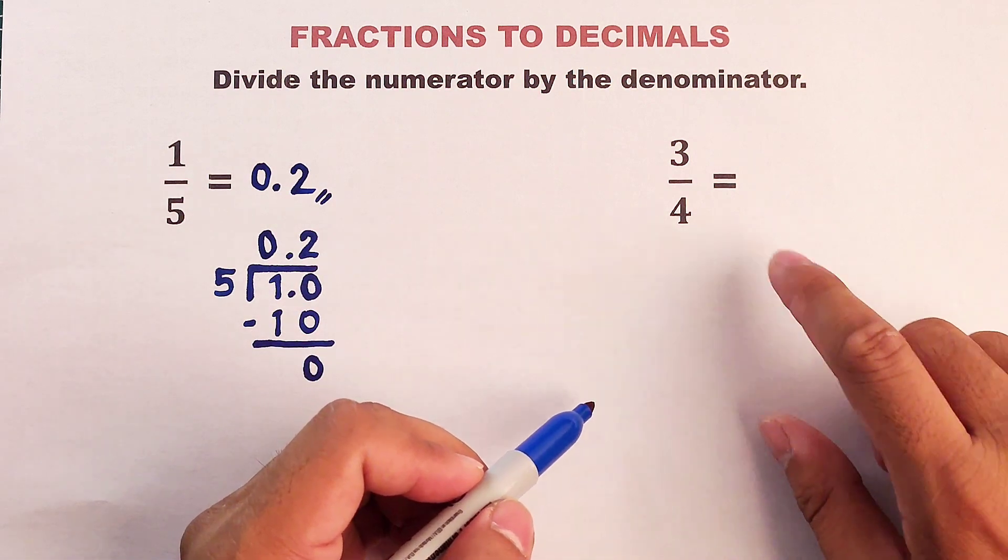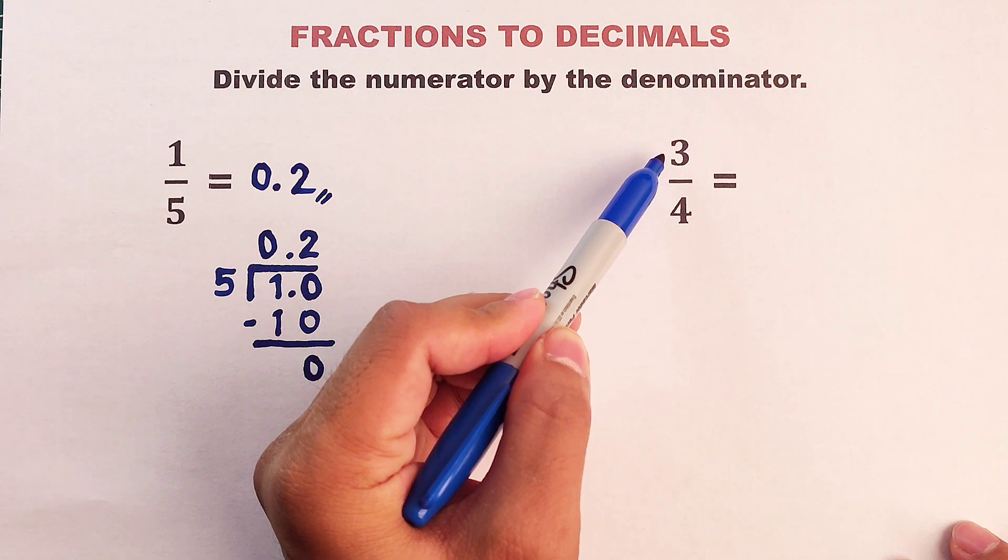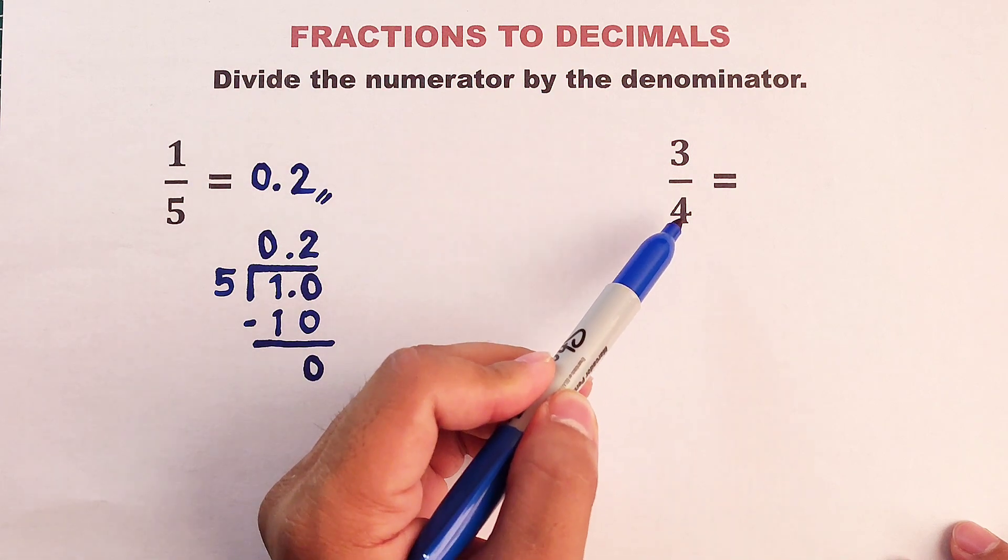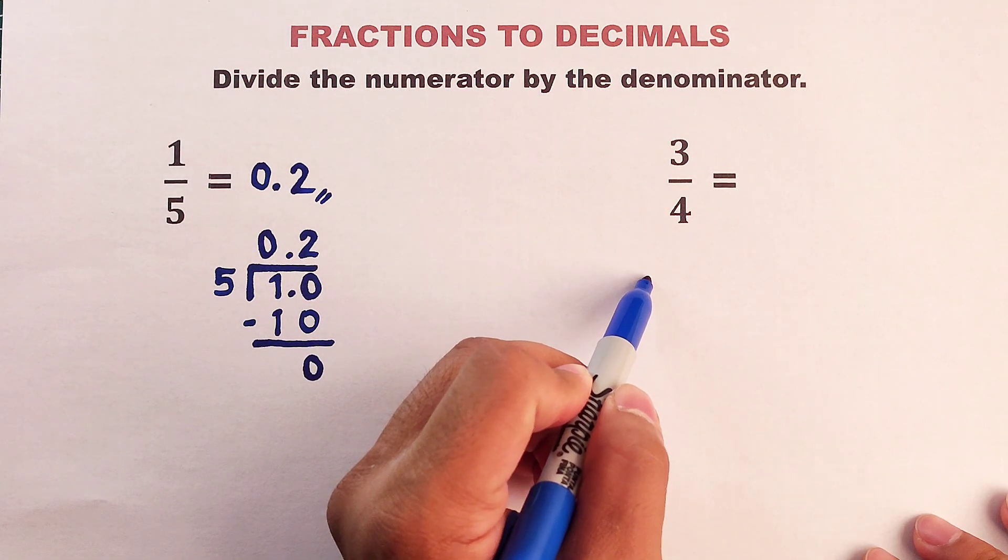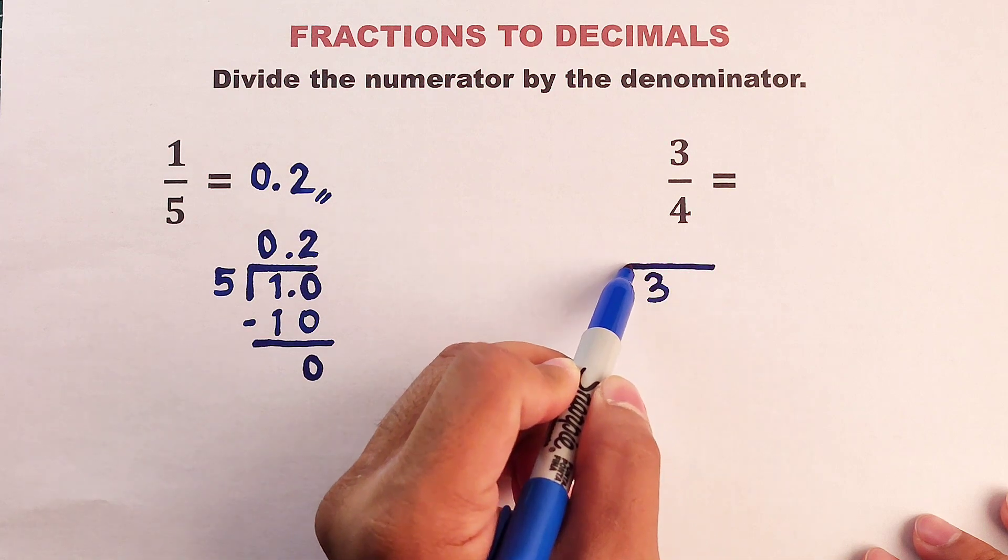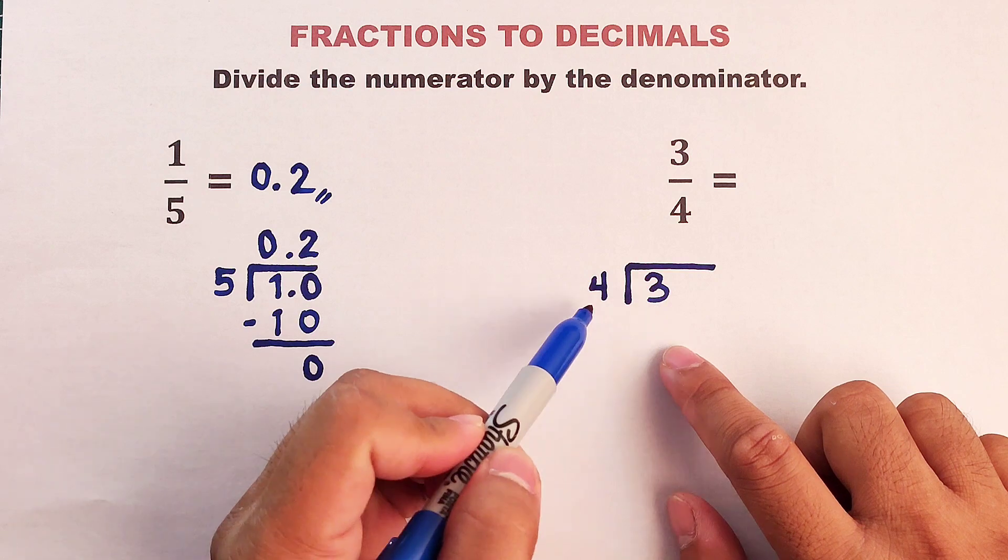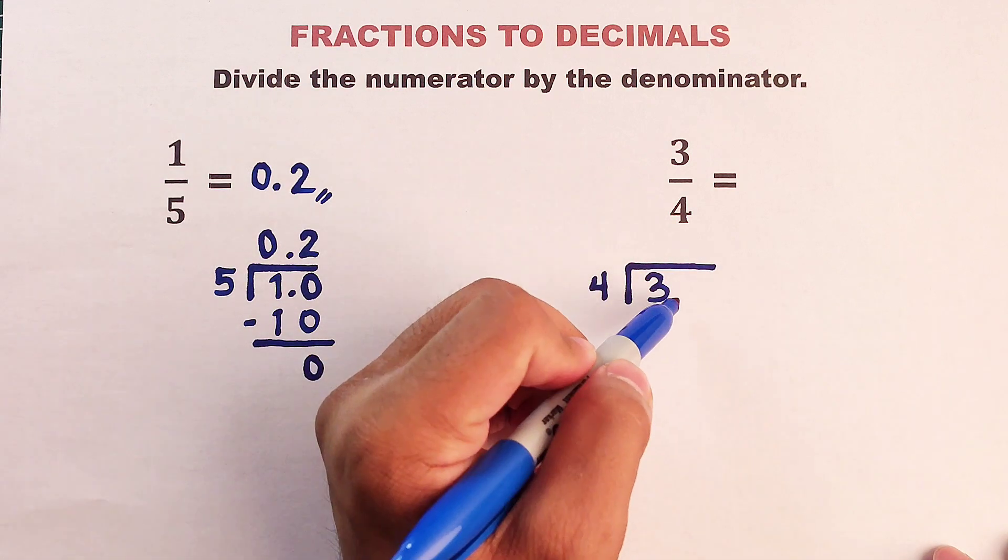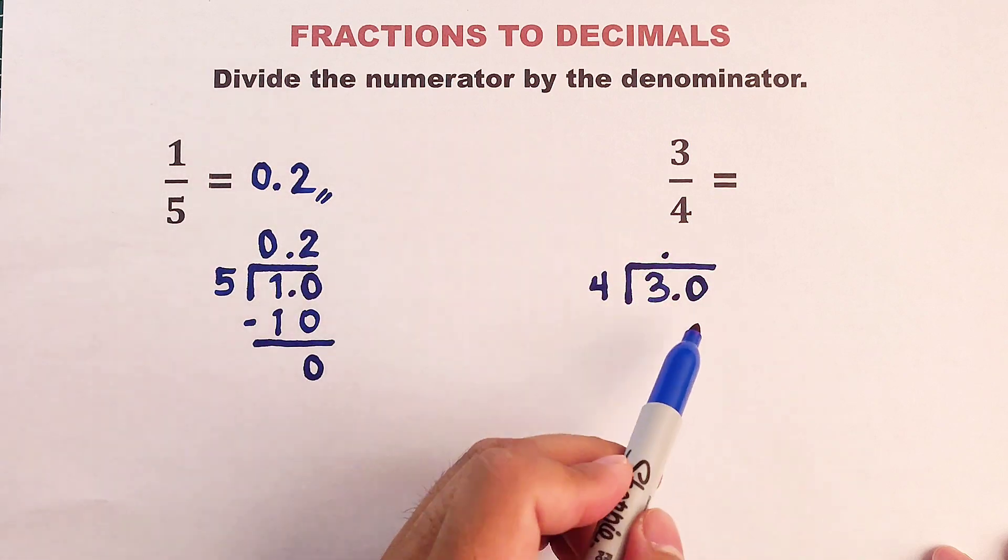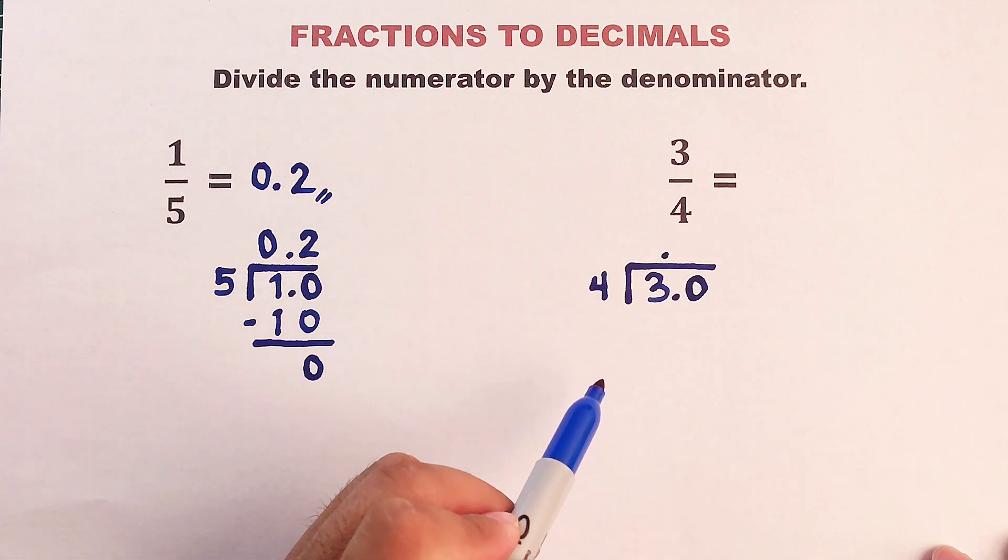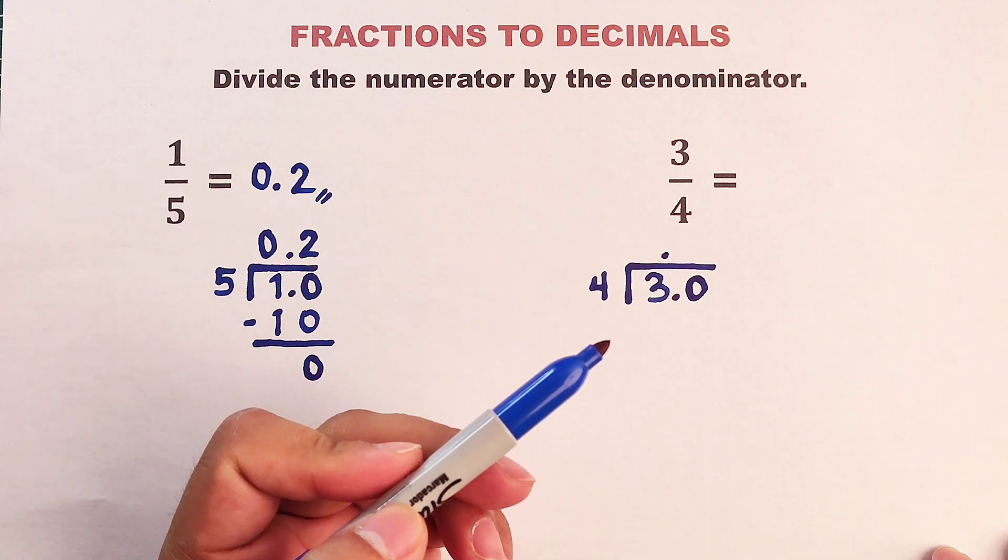Now let's proceed with item number 2, which is 3 fourths. So now, your numerator here is 3, your denominator is 4. So we will divide the numerator 3 by the denominator, which is 4. So let's see. 3 divided by 4 cannot be. So same step or process, we will add decimal and 0 here. Decimal here. So right now we have 30. 30 divided by 4. Or in other words, how many 4s do we have in 30?